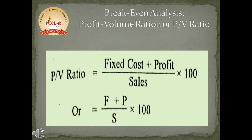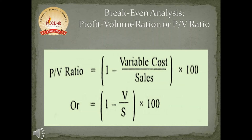We can also calculate PV ratio with the help of fixed cost, profit, and sales. Here, PV ratio equals fixed cost plus profit, whole divided by sales, multiplied by 100. There is another formula: PV ratio can be found as 1 minus variable cost divided by sales, and the entire resulting figure is multiplied by 100.